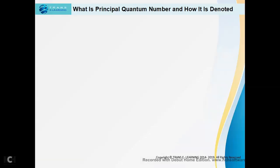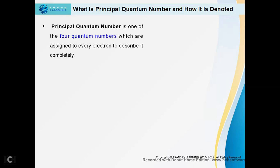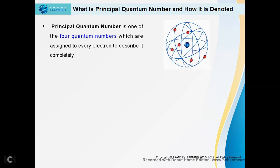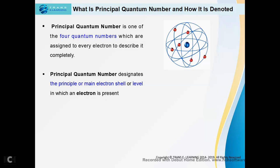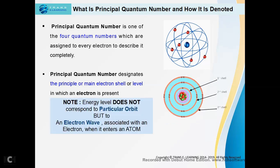First of all, let us understand what is principal quantum number and how it is denoted. Principal quantum number is one of the four quantum numbers which are assigned to each and every electron to describe it completely. Basically, principal quantum number designates the principal or main energy shell or level in which an electron is present. When talking about energy levels, in the quantum mechanical model given by Erwin Schrödinger, the energy level does not correspond to a particular orbit but to an electron wave associated with an electron when it enters an atom. This is a very important point worth noting.